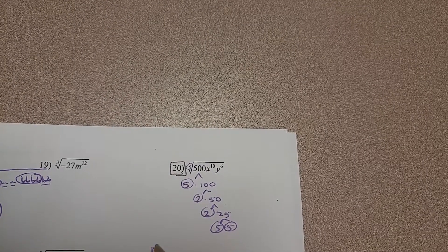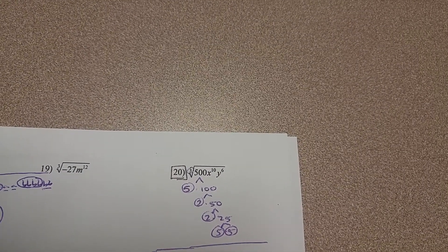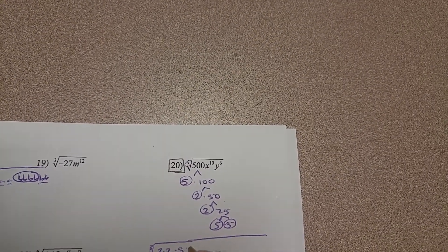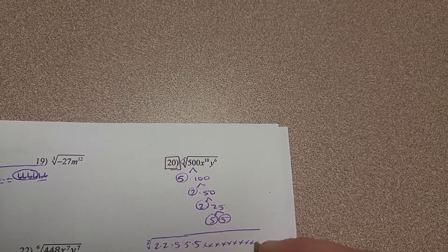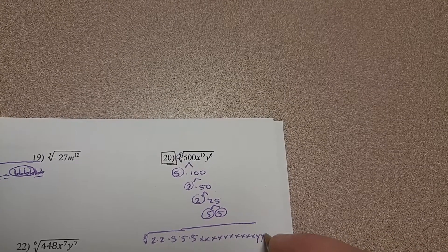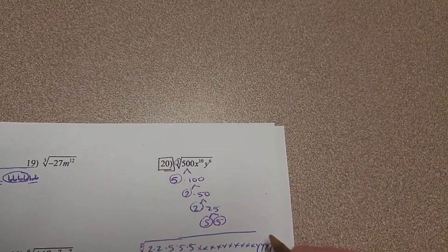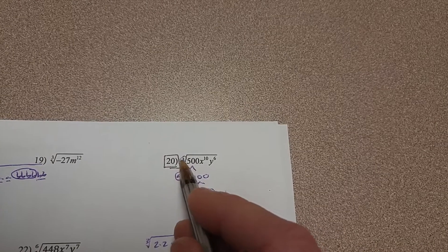So I have the cube root of 2 twos, 3 fives, 10 x's, and 6 y's, and I'm looking for groups of 3.